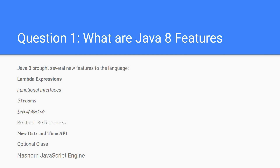First question: what are Java 8 features? Java 8 brought several new features to the language. Earlier we didn't have lambda expressions — this provides functional programming, one of the major changes in Java 8. For this, they introduced functional interfaces. Functional interfaces and lambda expressions have a relationship. To perform bulk operations on collections, they provided streams. Default methods also belong to functional interfaces.